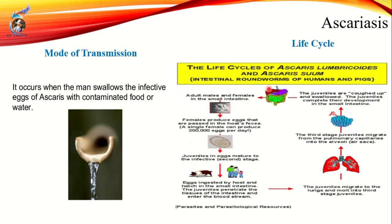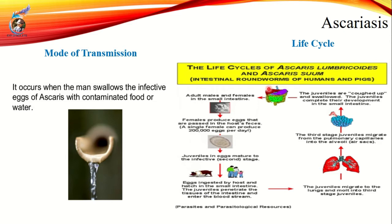The larva will mature in the lungs before entering the throat. From the lungs, the larvae hatch and migrate to the throat. The mature adult worm converts into a female worm which can produce more than two lakh eggs per day. The eggs leave the body through the person's stool, and this is how Ascaris completes its life cycle.